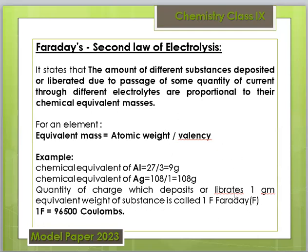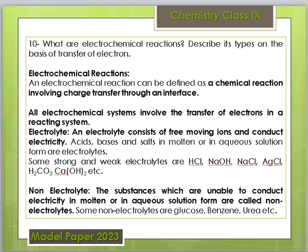The quantity of charge which deposits one gram equivalent of a substance is called one Faraday. If one gram equivalent is deposited, we say one Faraday. The quantity is 96,500 coulombs. If you want to state it, the equation will be enough. This completes question number 9.